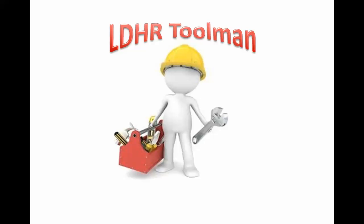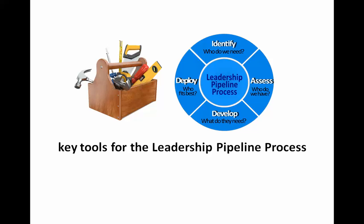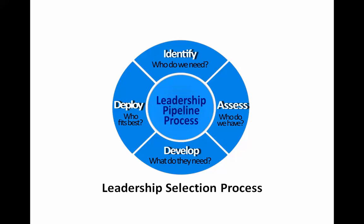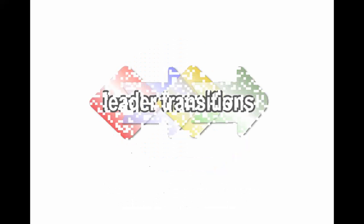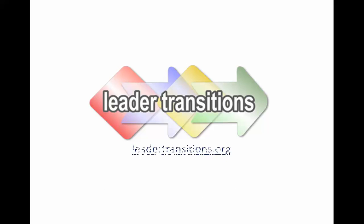Greetings again teammates. Welcome to this episode of the LDHR Toolman. We've been exploring how to understand and use the key tools for the leadership pipeline process. Today we'll take a look at the main tools to implement the leadership selection process in the deploy step, which provides an effective standard process to help ensure we're able to select the right people for needed leadership roles. The deploy step is covered in the Leader Transitions Toolkit, which can be found at leadertransitions.org.